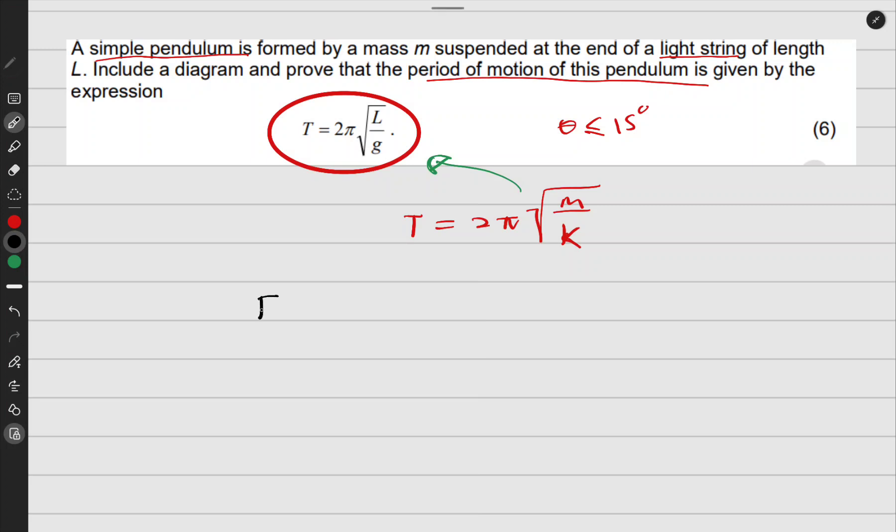The force that is bringing back the pendulum is approximately equal to negative mg sin θ, which is approximately negative mg θ.